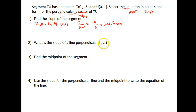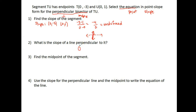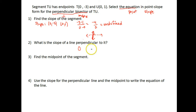What's the slope of a line perpendicular to it? Usually we put the opposite sign and flip the fraction, but here the slope is undefined, which means a vertical line. The line perpendicular to a vertical line is a horizontal line, and horizontal lines have a slope of 0. So undefined slope and 0 slope — those lines are perpendicular to one another. That's a special case worth memorizing.